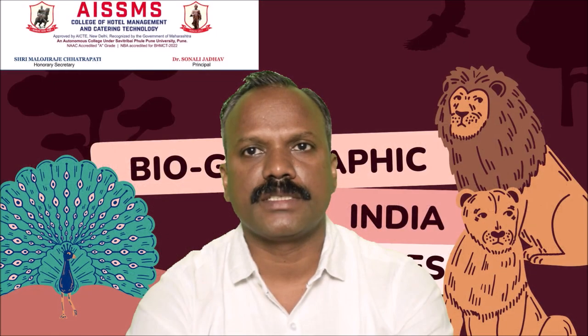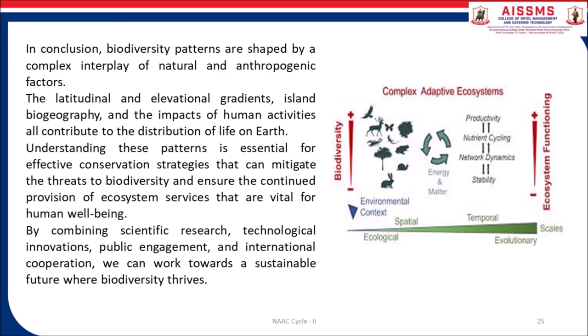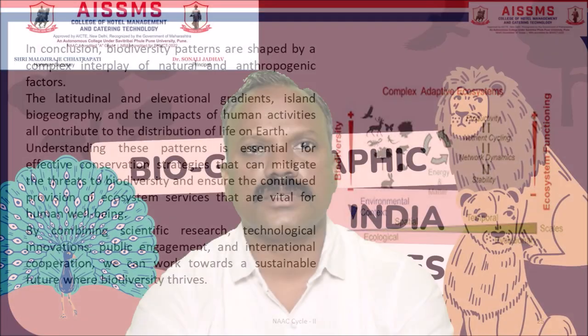Collaboration among countries, non-governmental organizations and the private sector is essential for achieving these goals. In conclusion, biodiversity patterns are shaped by a complex interplay of natural and anthropogenic factors. The latitudinal and elevational gradients, island biogeography and the impacts of human activities all contribute to the distribution of life on Earth. By combining scientific research, technological innovations, public engagement and international cooperation, we can work towards a sustainable future where biodiversity thrives.